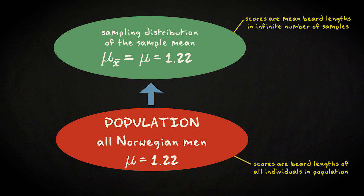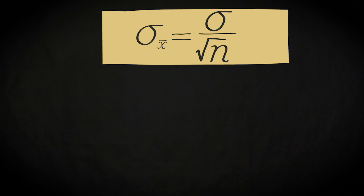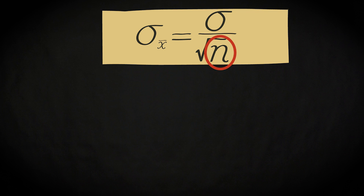If we know what the distribution of the population looks like, we can also easily compute the standard deviation of the sampling distribution. The standard deviation of the sampling distribution is symbolized by sigma x-bar and is equal to sigma divided by the square root of n. The x-bar is added to make clear that we are talking about the standard deviation of the sampling distribution in which the scores are sample means, or x-bars. Sigma stands for the standard deviation in the population, and n stands for the sample size.